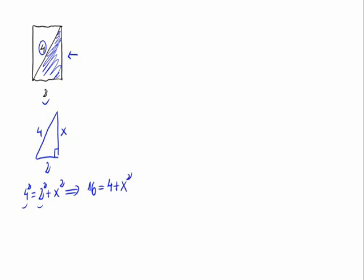This 4 goes to the side as minus 4, so 16 minus 4 would be equal to x squared. So x squared would be equal to 12.